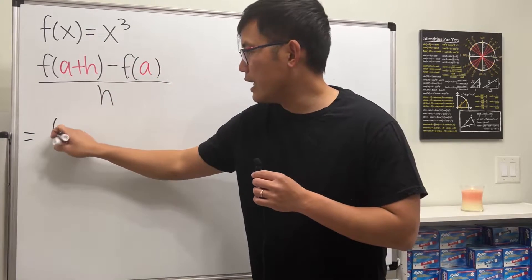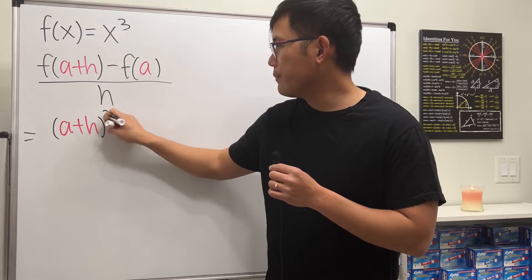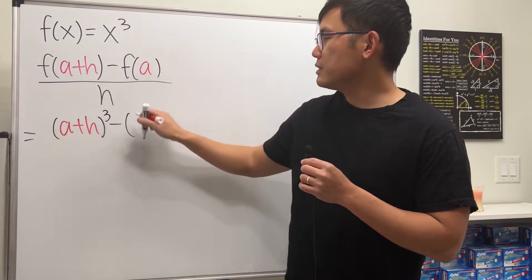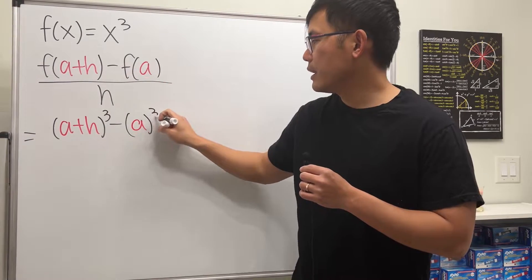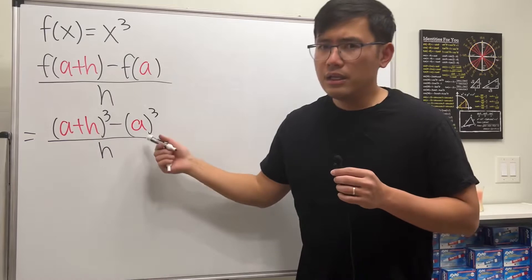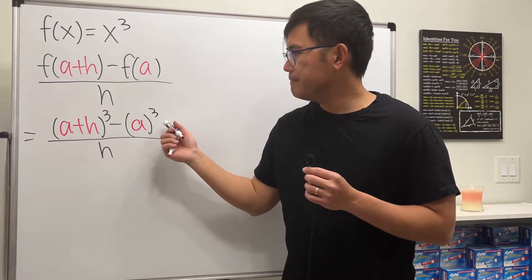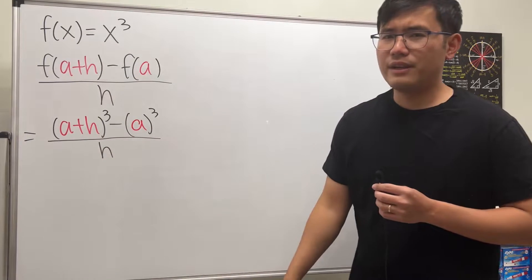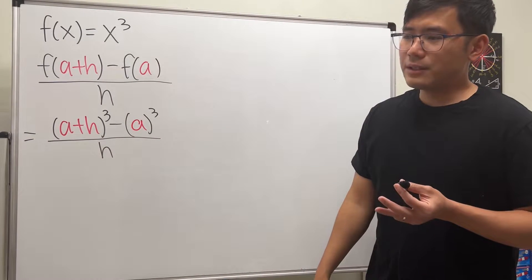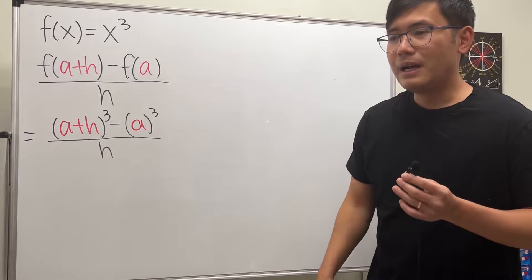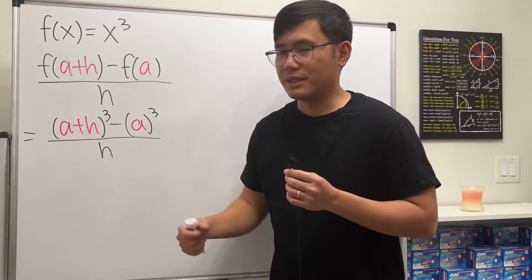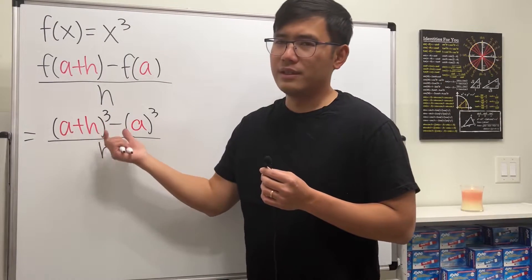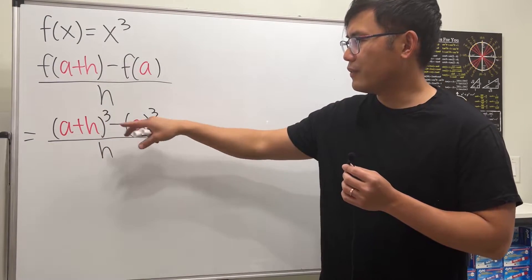For the next example, we put a+h into x, so we get (a+h) to the third power, minus f(a) which is just a to the third power, all divided by h. Looking at the top, this looks like a difference of two cubes — it's factorable with that formula — but I'd recommend just multiplying it out and collecting terms, since you still have to expand when using the difference of two cubes formula.